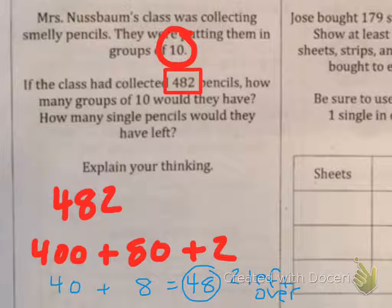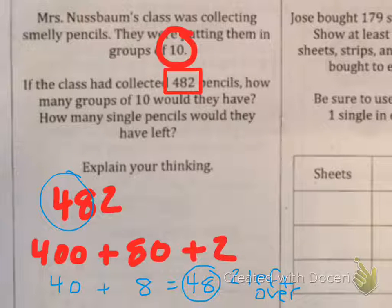Okay, let me show you again how I did it. I could also just know that there are 48 tens in 482, and then there would be 2 left over. Thank you.